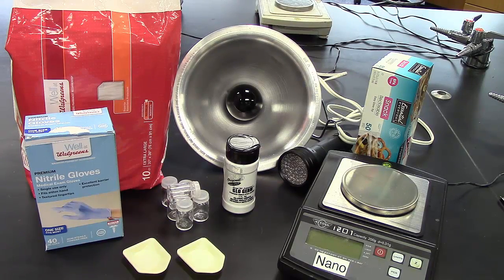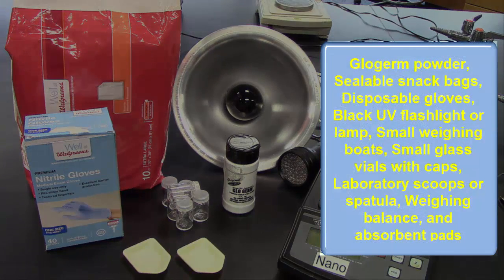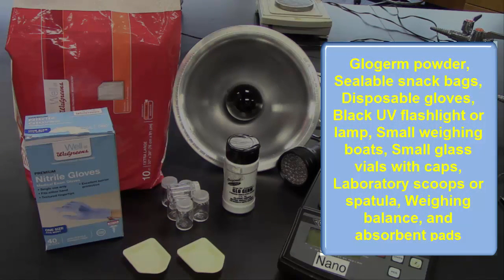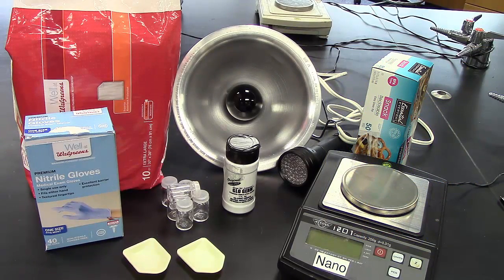To get this activity started, you will need glow germ powder which can be purchased from Amazon.com, sealable snack bags, disposable gloves, a black UV light source from either a UV flashlight or lamp, small weighing bolts, small glass vials with caps, laboratory scoops or spatula, a laboratory balance for weighing, and absorbent pads that can be used over a bench top. You may need an extension cord and power strip if necessary and be sure to have a sink nearby for clean up.